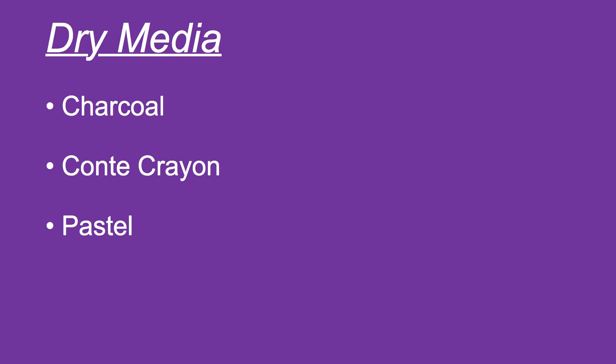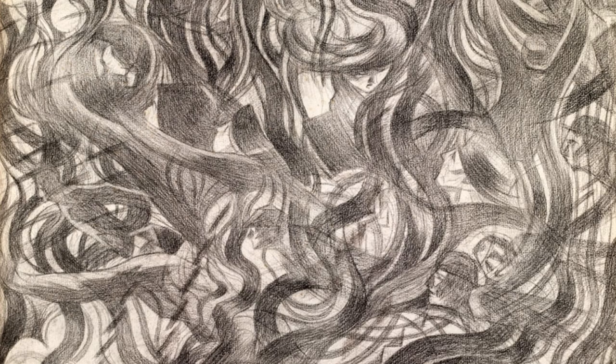With drawing there are two types of media: dry media and wet or liquid media. Dry media include charcoal, Conte crayon, and pastel. This example of charcoal is a drawing by Umberto Boccioni called 'States of Mind: The Farewell,' 1911. The sticks of charcoal used today are very similar to those used by prehistoric people — they're essentially charred wood sticks. When you burn wood until it's all black, you can draw with it. With charcoal, dark passages can be drawn very quickly.